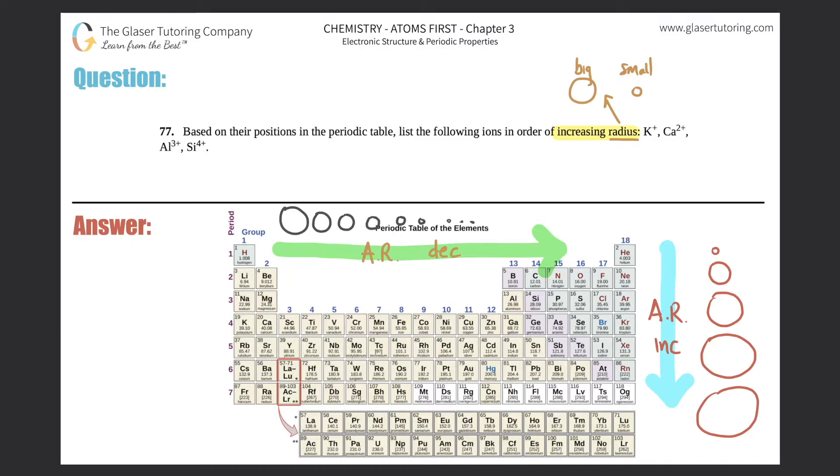All right, so let's see where the ions that they told us were on the periodic table. So we're talking about K+, so potassium's right here. Ca2+, so calcium's right here. Al3+, so right here. And then silicon 4+, which is right here.